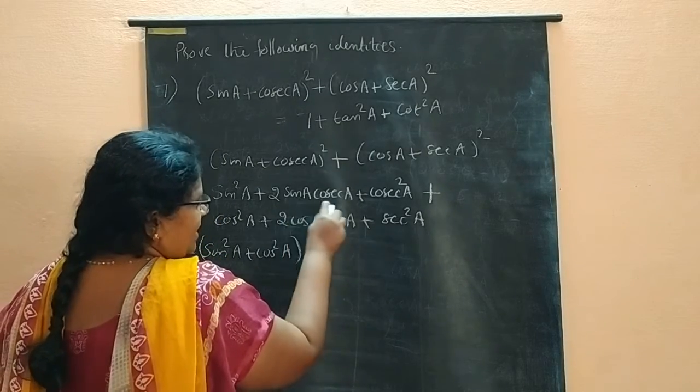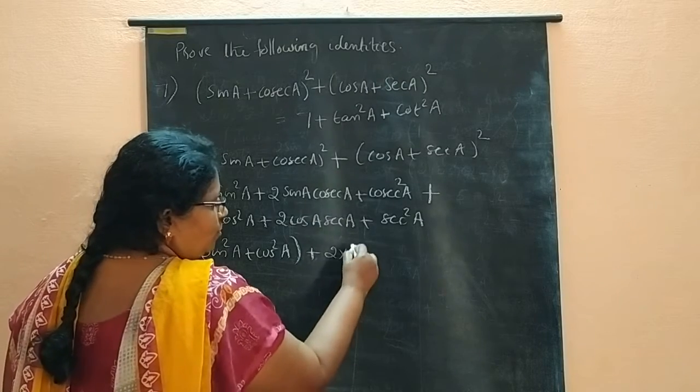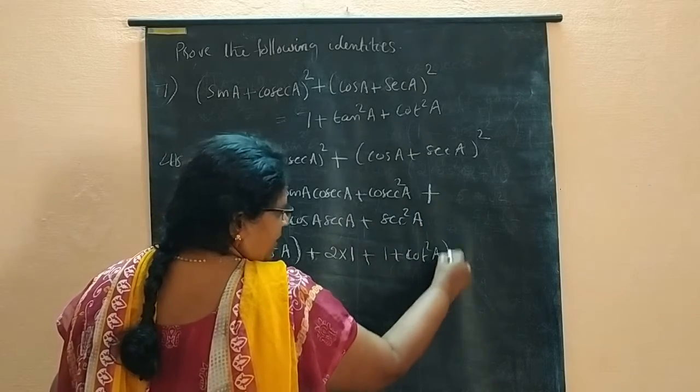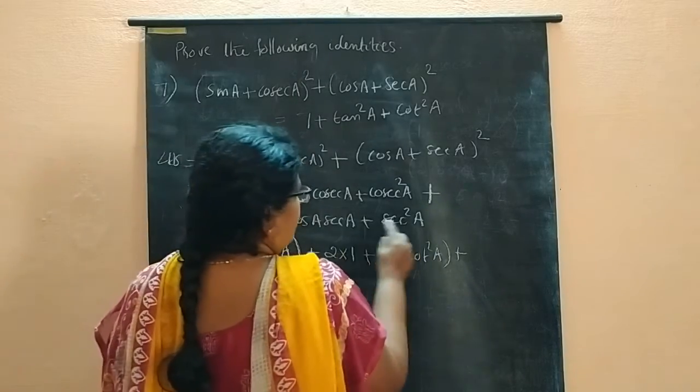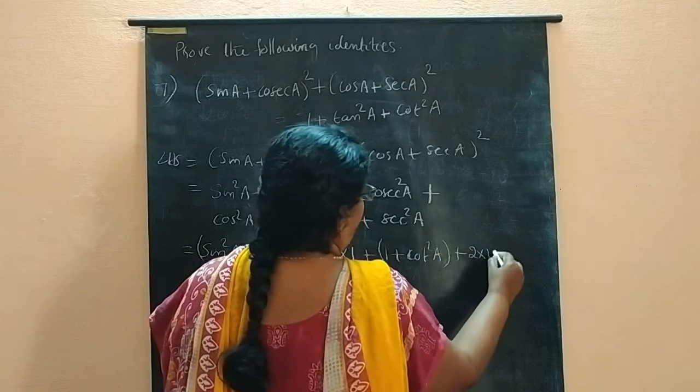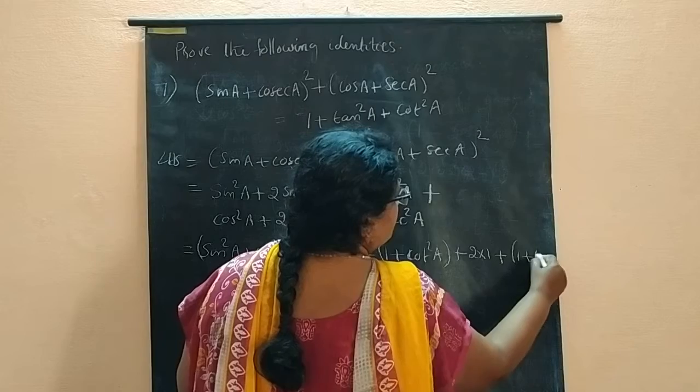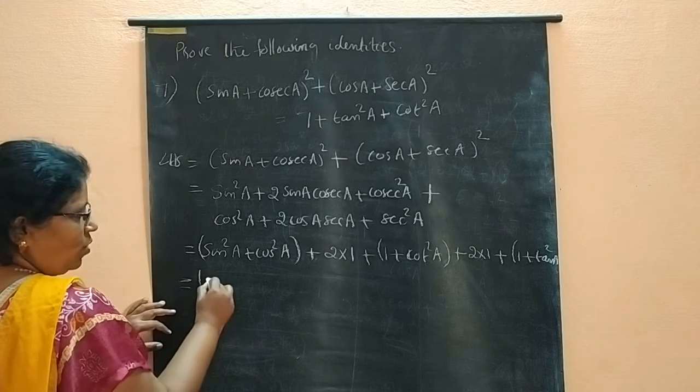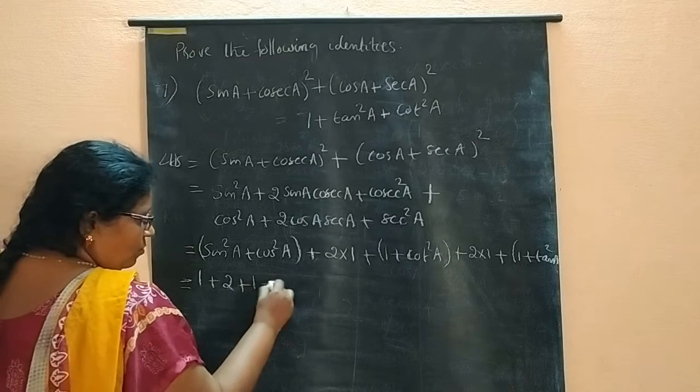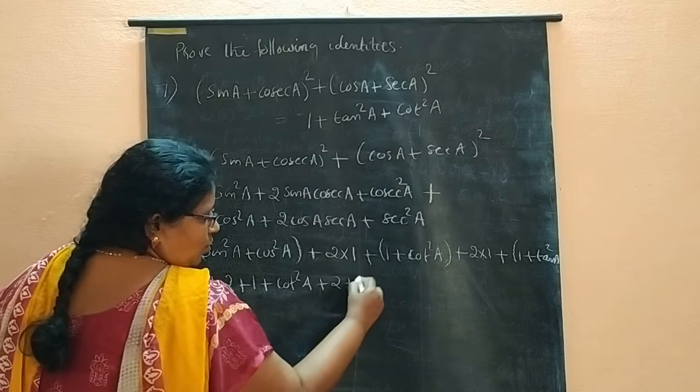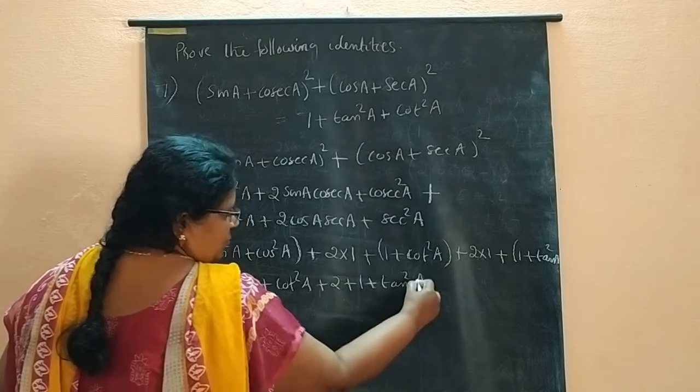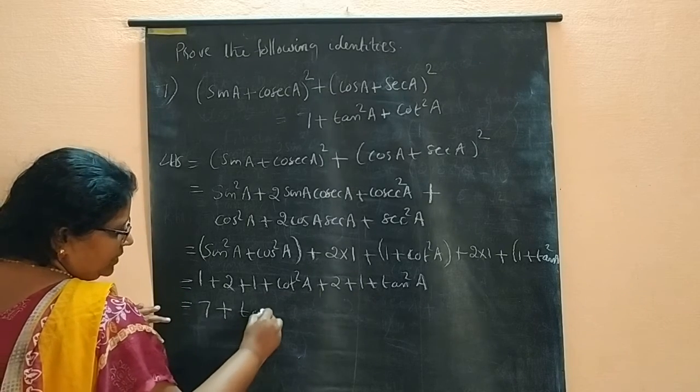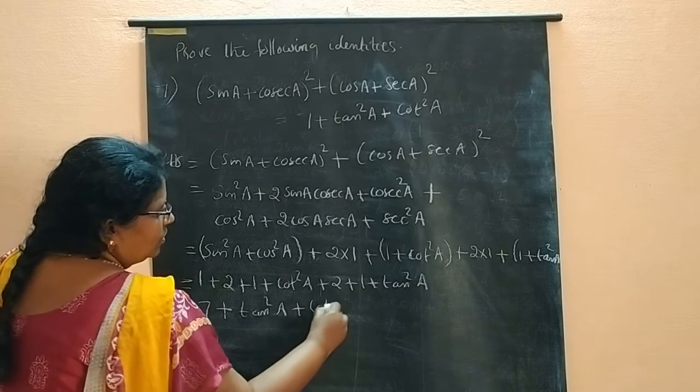Plus 2 sin A cosec A reciprocal. 2 into 1. Plus cosec square A we can write as 1 plus cot square A. Cos square A plus 2 plus 2 plus sec square A. 1 plus 2 plus cot square A plus sec square A.